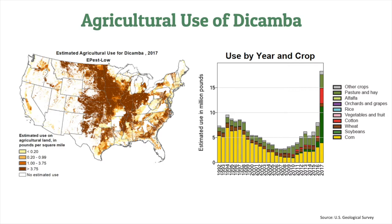If you look at the graph on the right, which shows the estimated use of dicamba in millions of pounds by year and crop, you can see a steady decline in its use for 10 to 15 years following the introduction of glyphosate-resistant technology. Then a steady increase that likely correlates to the emergence of glyphosate-resistant weeds. Then we see a major spike in 2017, the most recent year of data available. The amount of dicamba applied to all U.S. crops more than doubled in 2017 relative to 2016, driven by increased use in soybeans and cotton.